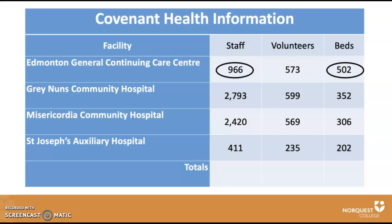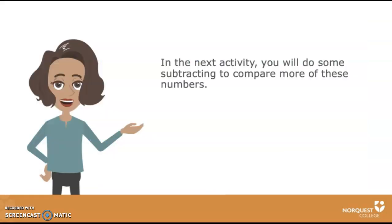Now take another look at the table. Is there anything surprising there? Look at the number of staff at the Edmonton General in comparison to the number of staff at other hospitals. Now look at the number of beds. In the next activity, you will do some subtracting to compare more of these numbers.